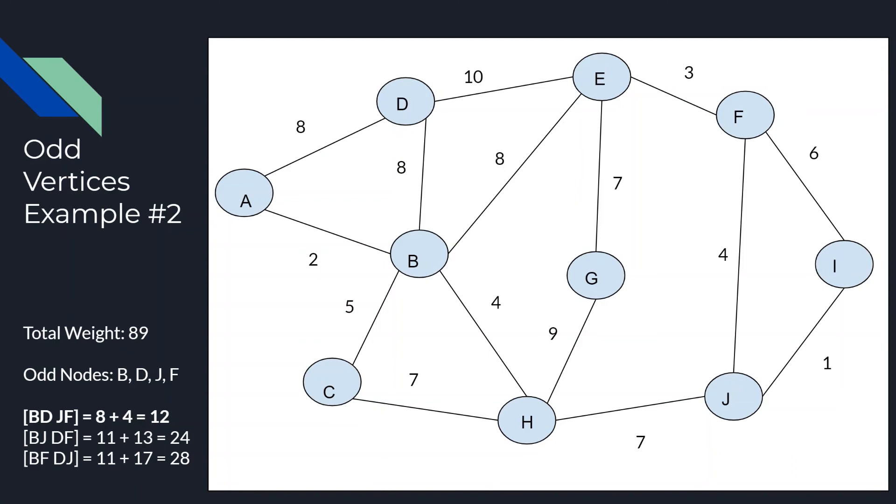And in the same style, we can pair node B with node J. Finding the shortest path of that would give us a weight of 11. And if that is the case, then node D would be paired with node F. And finding the shortest path would give us a total sum weight of 13, making that a total of 24.